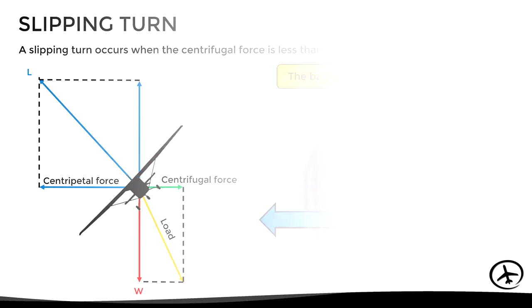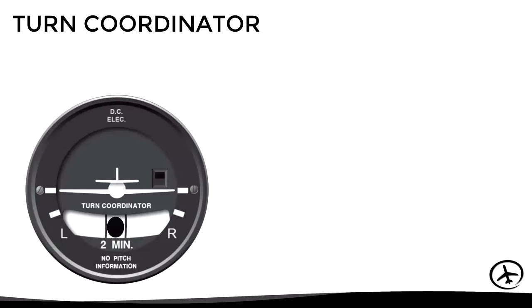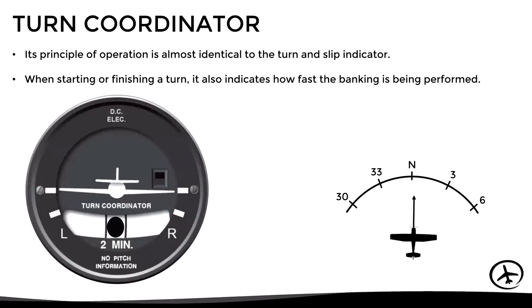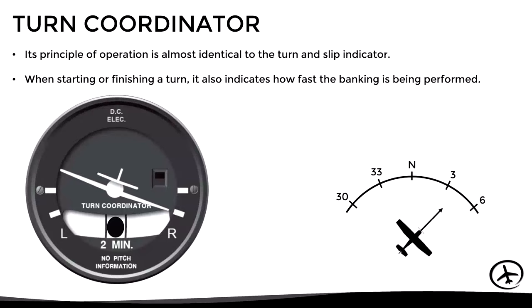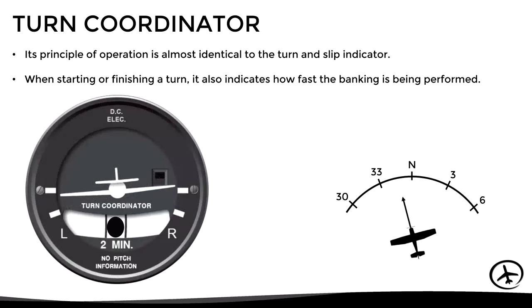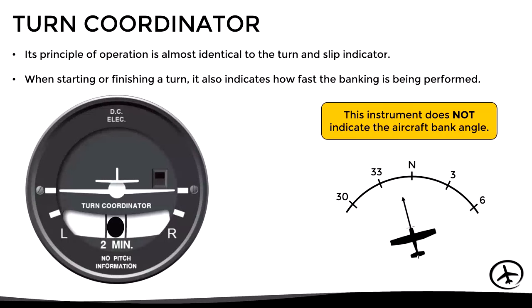Let's now move on to the other variant: the turn coordinator. Its principle of operation is almost identical to the turn and slip indicator. However, the slight difference is that when starting or finishing a turn, it also indicates how fast the aircraft is banking — not only the rate of turn. Despite this additional functionality, this instrument does not indicate the bank angle; for that, we use the attitude indicator.